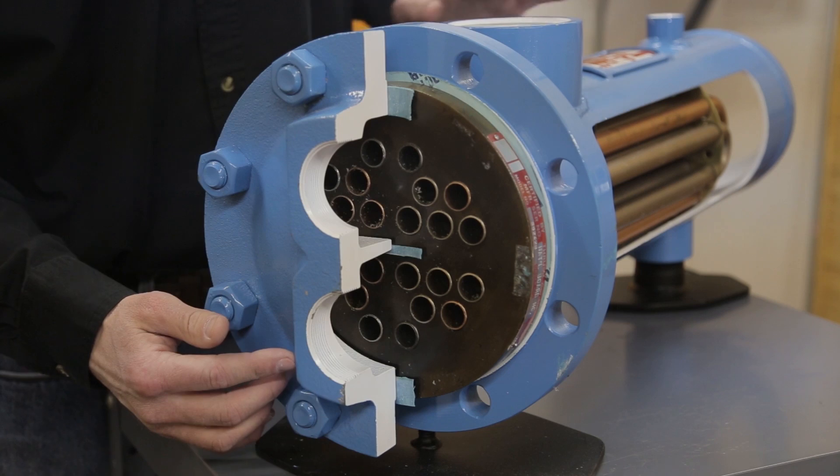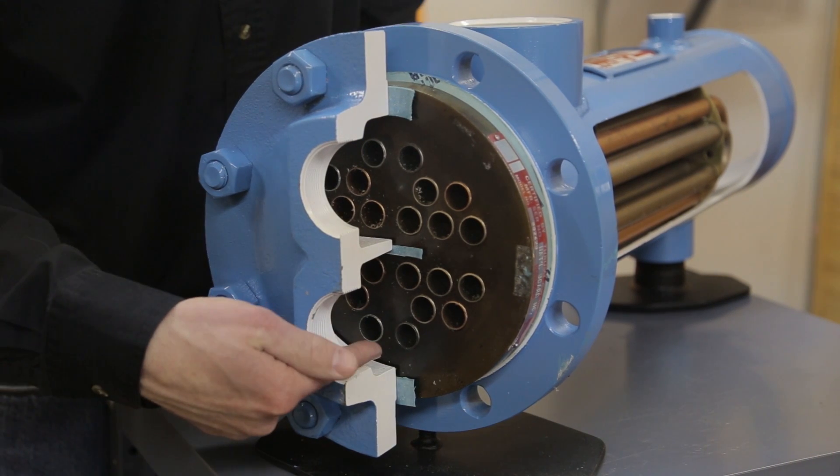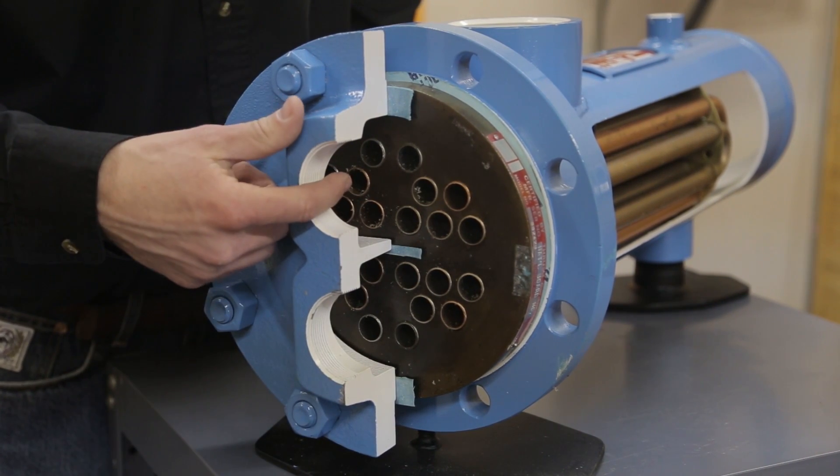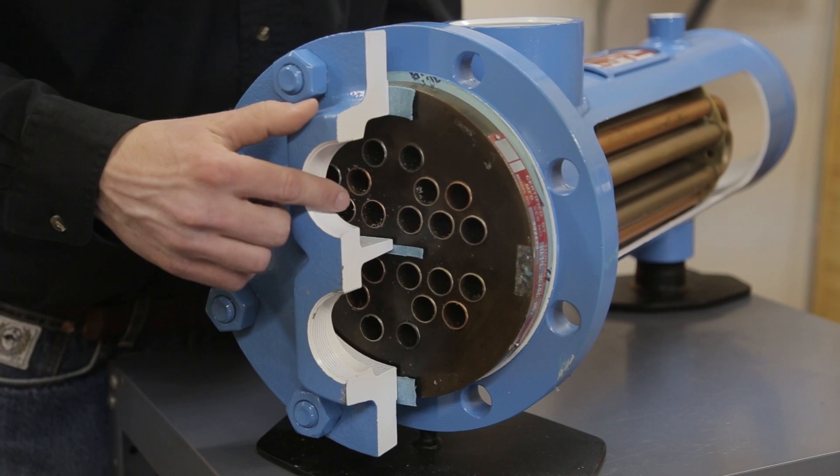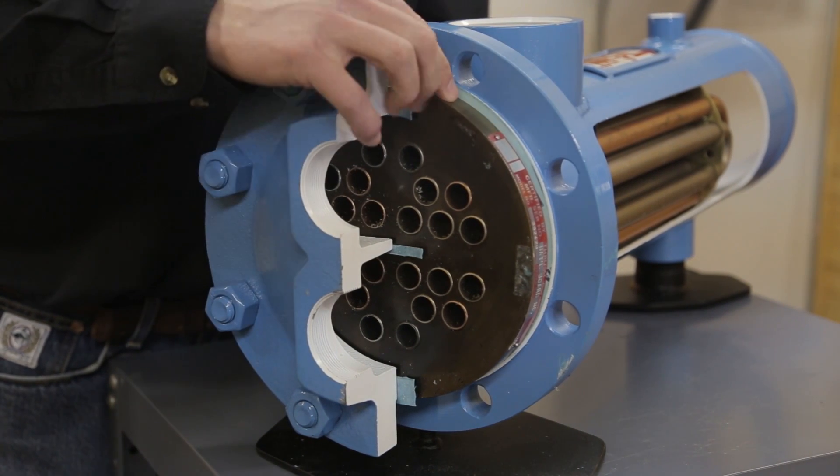This would be what we would call counter flow, and you'd see the water come in on the bottom of the tubes, come up and go off the top of the tubes, and then out to our process. You can also see here the gaskets and the tube sheet.